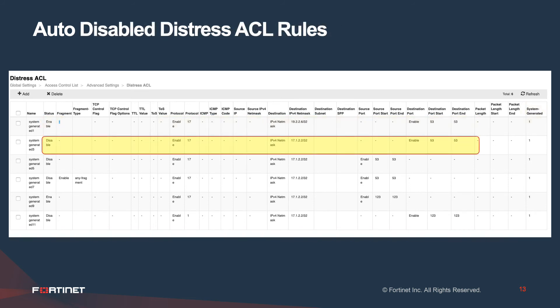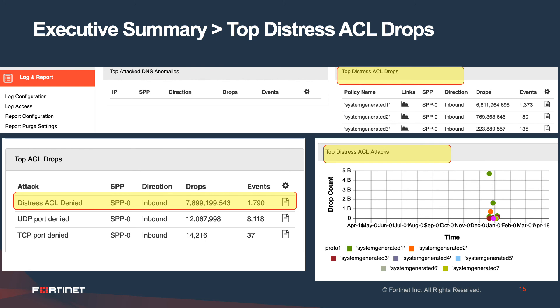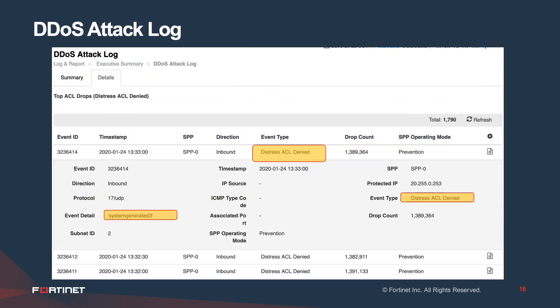A rule that has been disabled because drops have fallen below the low threshold is also visible. Once these rules are in place, you can see packet drops in the switch fabric in the distress ACL drop graphs under the Monitor tab. You can also see these in tabular and graphical form in the Executive Summary under top distress ACL drops, and in the DDoS attack log as distress ACL denied entries.